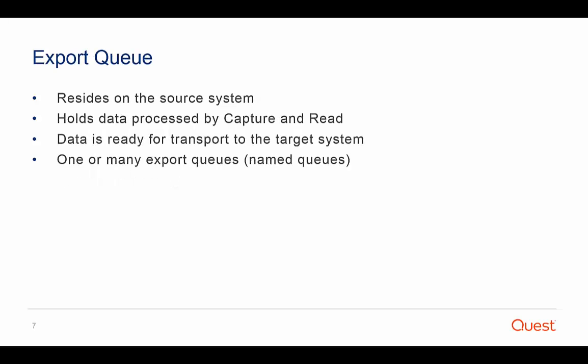Notice that even though we have a capture queue and a capture process, there is no read queue — there is just a read process. The export queue resides on the source system. It holds the data that has been processed by capture and read and is ready for transport to the target system. By default, there is one export queue on the source system regardless of the number of active configurations or target systems. However, you can instruct SharePlex to create multiple named export queues for more complex replication strategies.